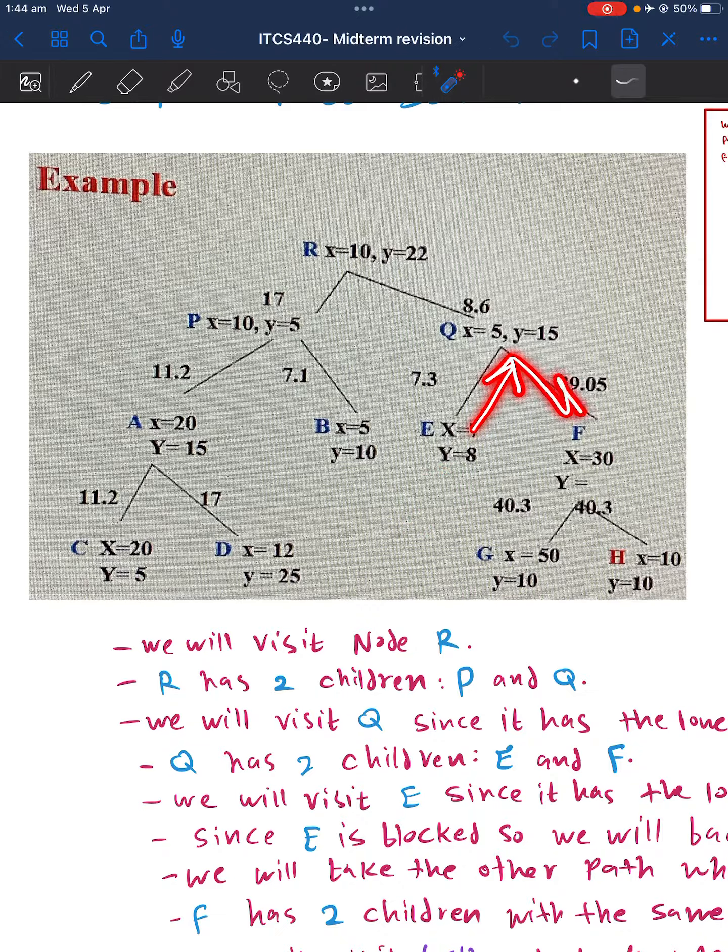E has 7.3, F has 39.05, so we visit E because it has the least number. Since E is blocked and it's not our goal, we will backtrack and take the other route which is F.